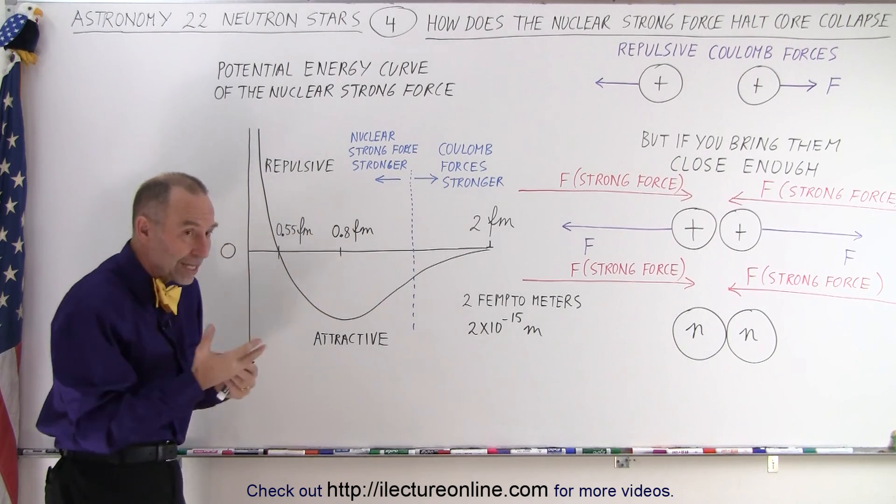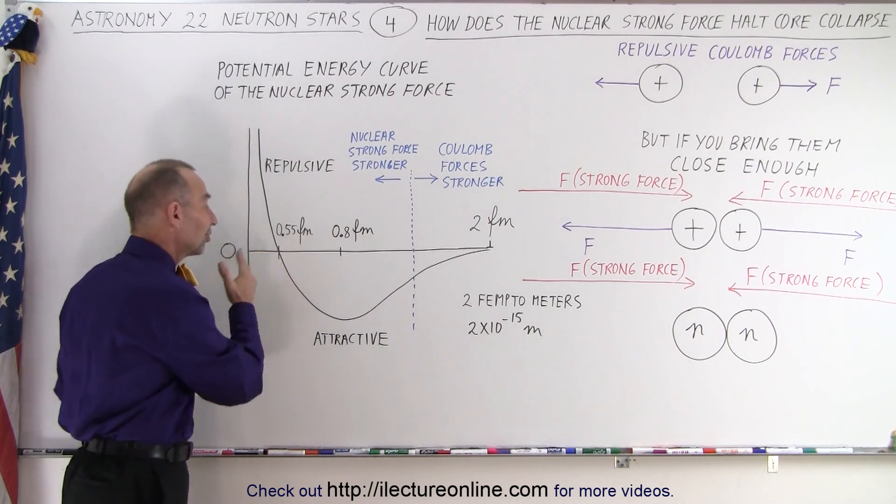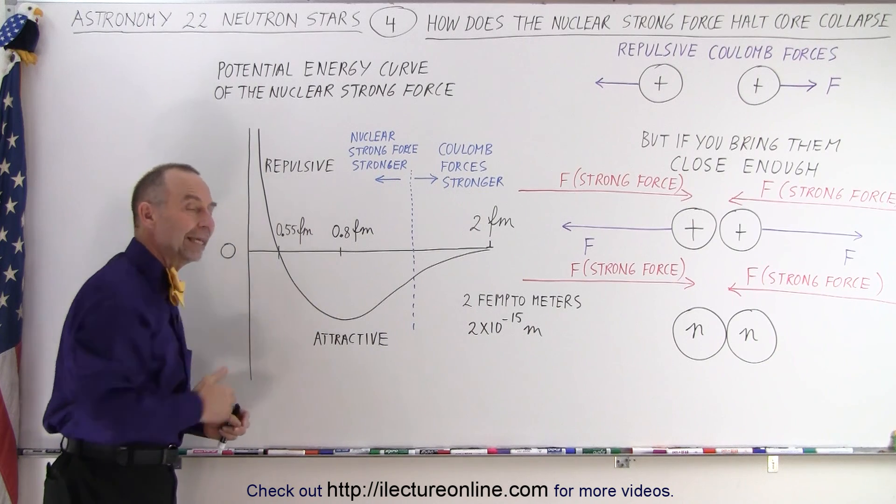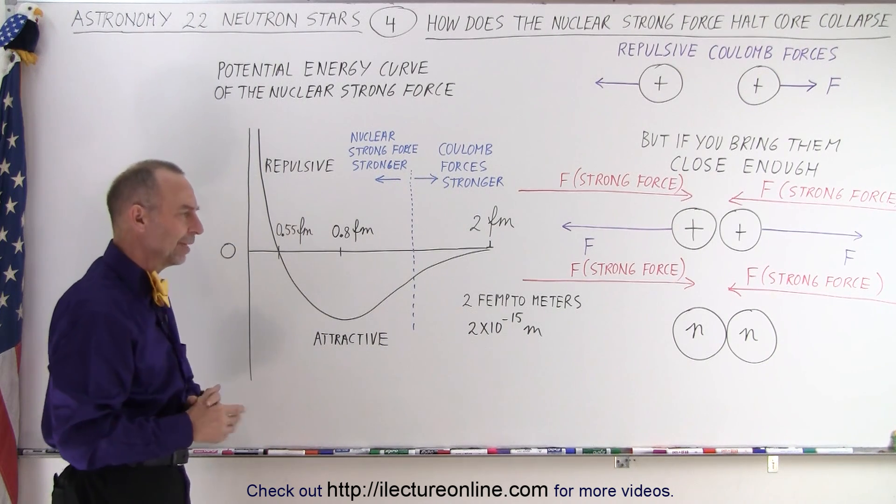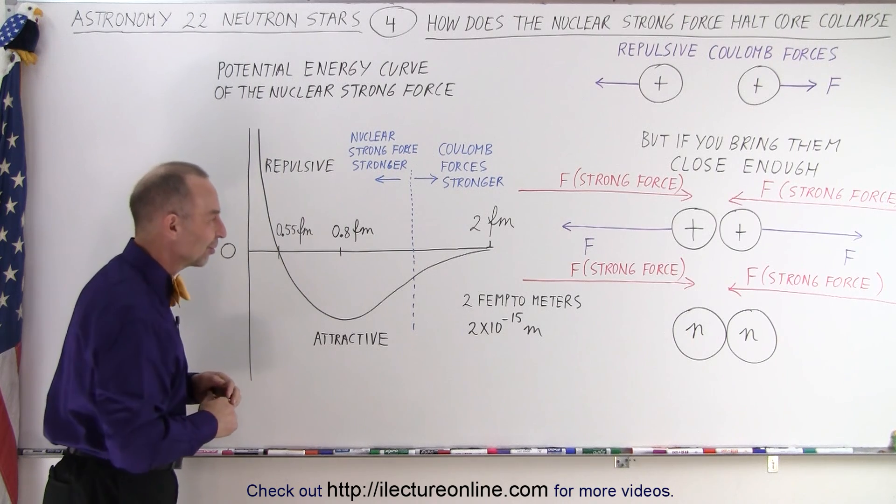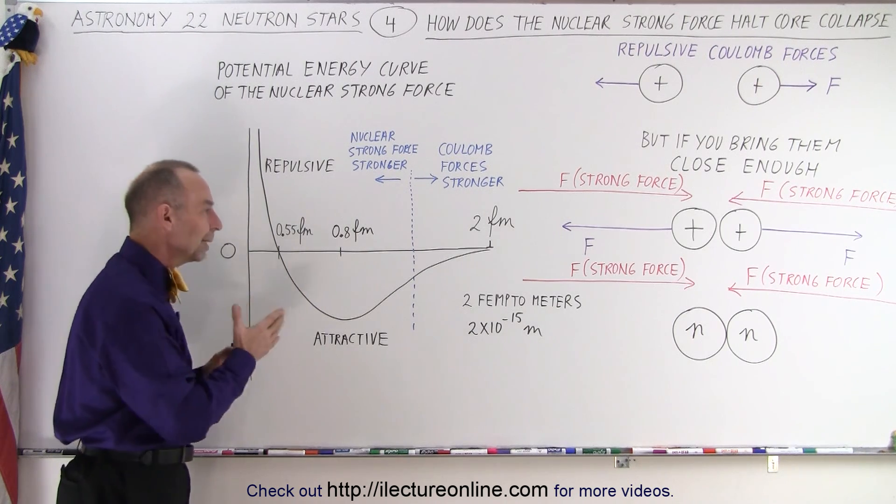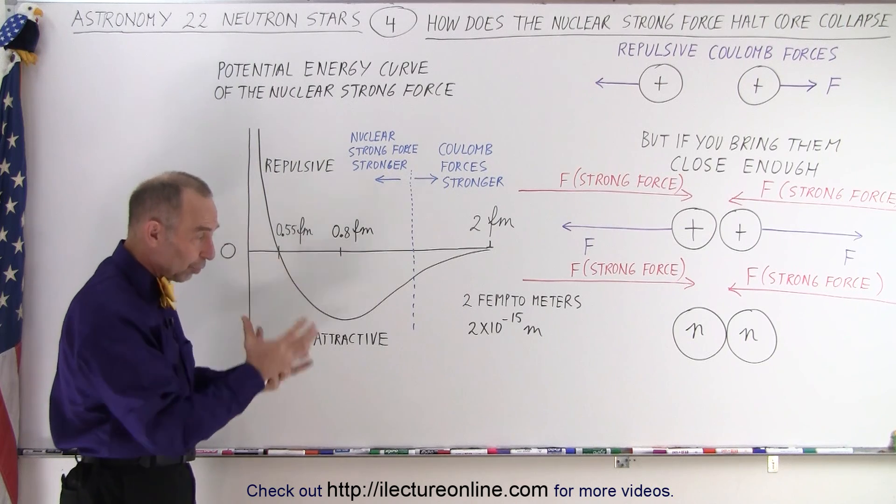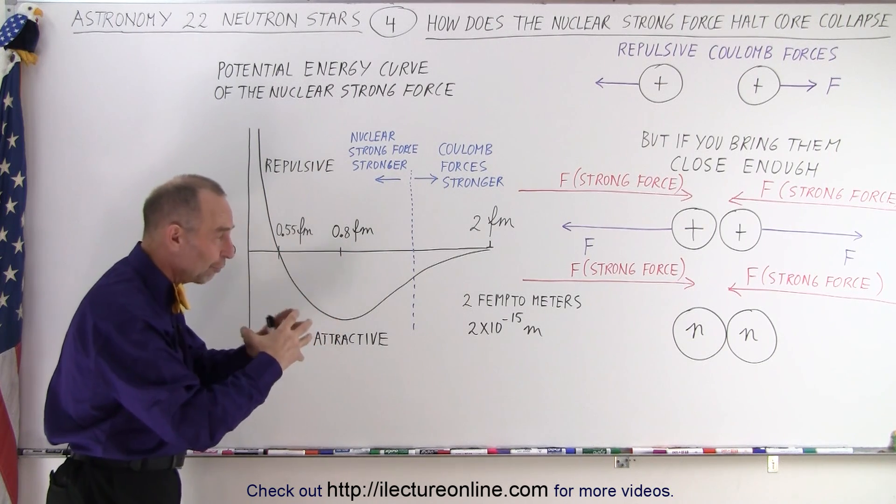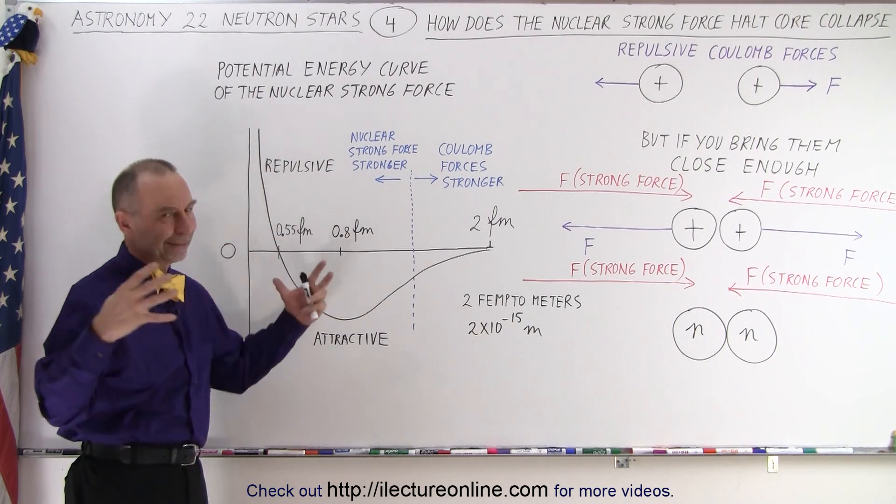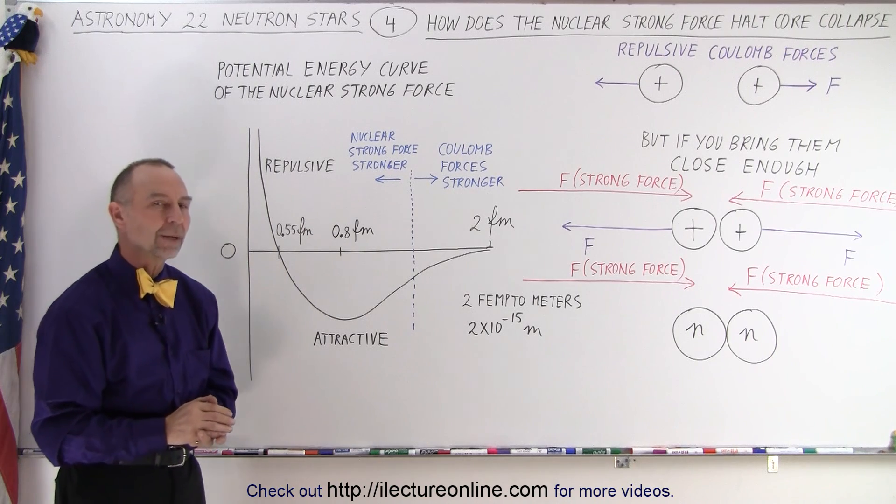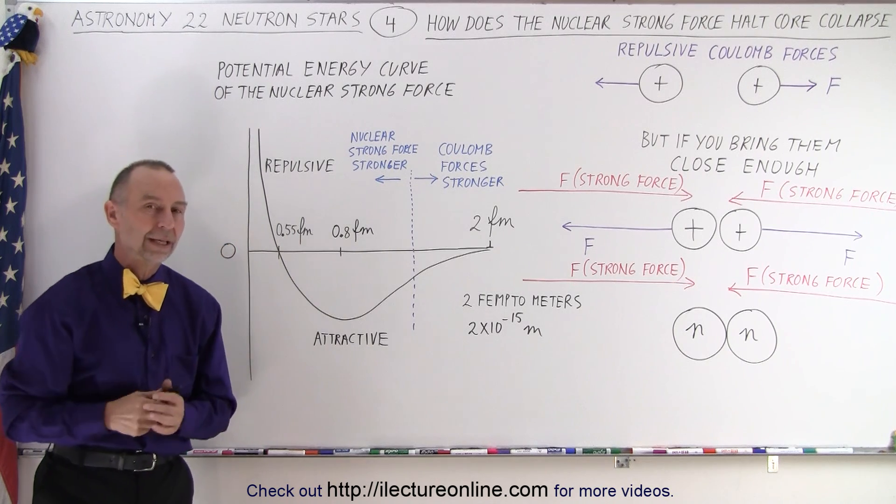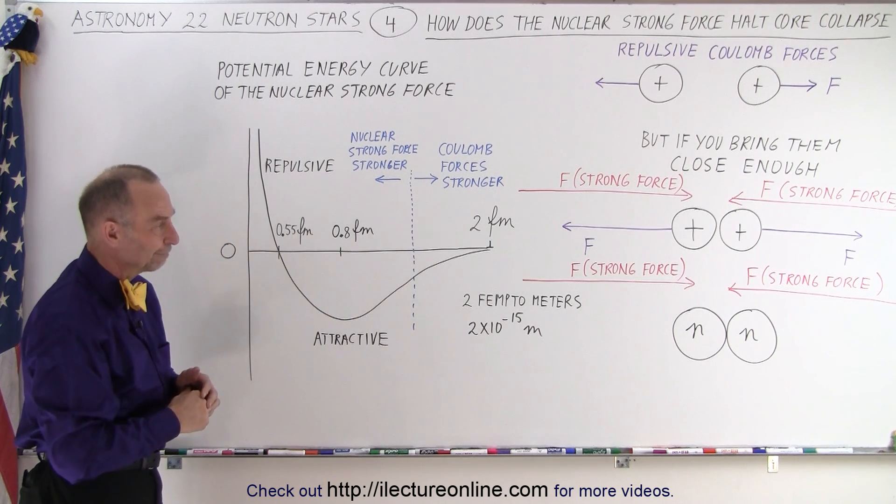Now, when the mass exceeds about three times the mass of the sun, these forces cannot withstand the enormous pressure created by the collapse of the core, and it will go beyond it being a neutron star. It will then turn into a black hole. But, of course, that's a whole other series coming up on videos later on. But, so this is the ultimate limit. The limit, we believe, is about 2.5 times the mass of the sun. If the neutron star doesn't have, the core of the neutron star doesn't have enough mass to overpower this nuclear strong force, well, then it'll bounce back and become a neutron star about 20 kilometers across. And that's the reason why the nuclear strong force halts the collapse as well as being held by the neutron degeneracy.